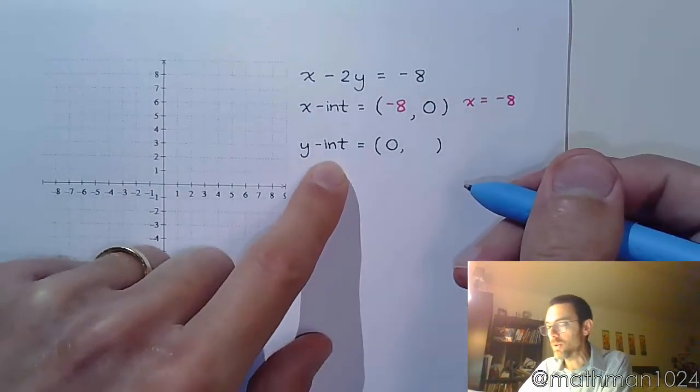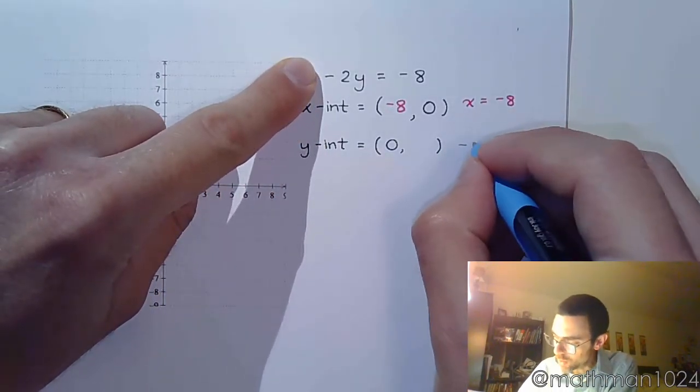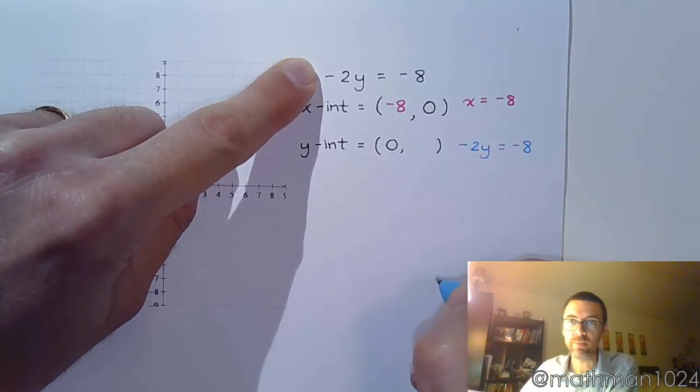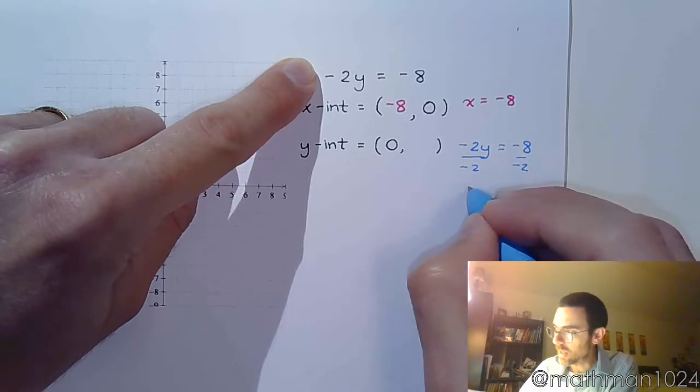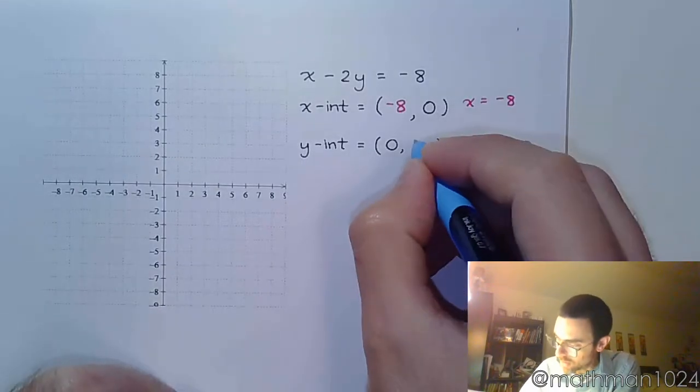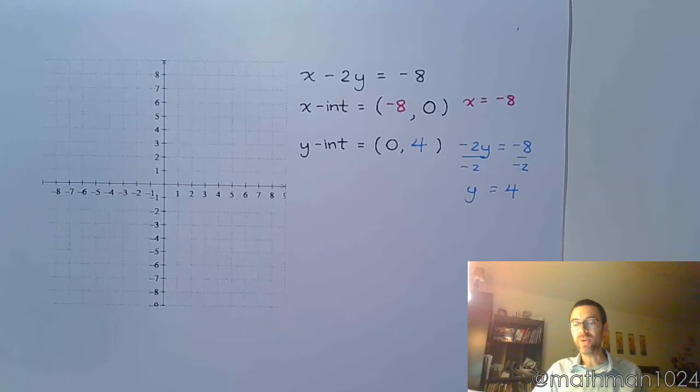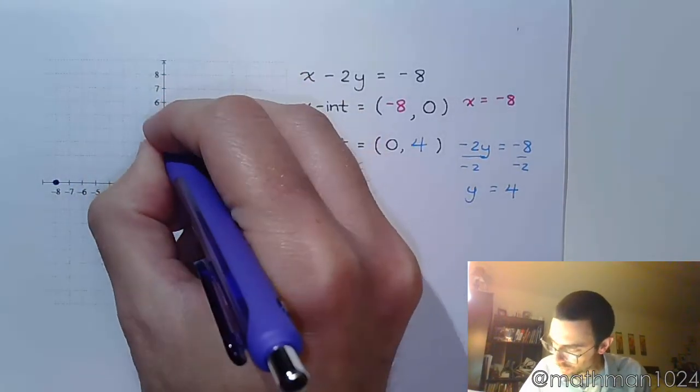And then for the y-intercept, if x is 0, we just cover this up and we see we have the equation negative 2y equals negative 8. Divide both sides by negative 2 and y is equal to positive 4. So there is your y-intercept. This is enough information for us to go ahead and graph the line. The x-intercept is negative 8 comma 0 and the y-intercept is 0 comma 4.